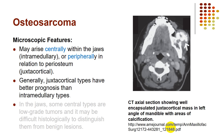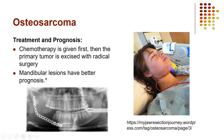Osteosarcoma can arise centrally inside the bone itself, or peripherally — meaning subperiosteal, under the periosteum — without originating in the medullary part. The juxtacortical or subperiosteal type has better prognosis than the intramedullary type. Treatment includes chemotherapy first to shrink the tumor, followed by radical surgical excision. Mandibular tumors have better prognosis because surgery can achieve safer margins more easily than in the maxilla.